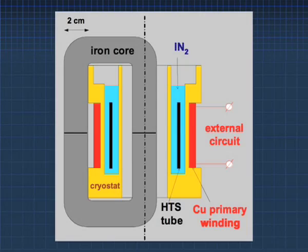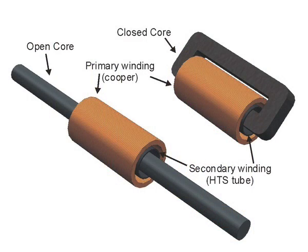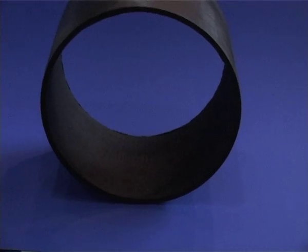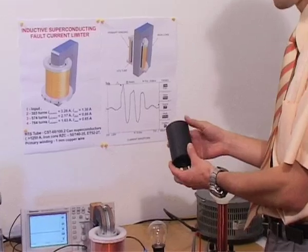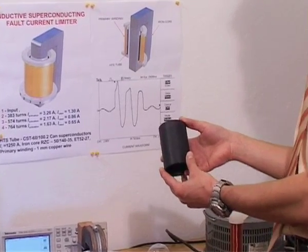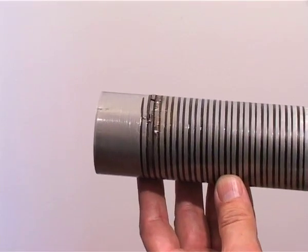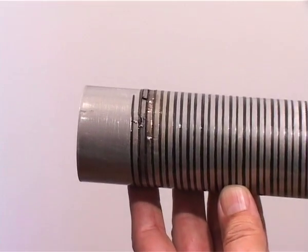The disadvantage of the inductive limiter is the large amount of iron and the very awkward nature of the cylindrical inductor. The advantage is that there are no current contacts to it, which cause losses in the resistive limiter, and also that hot spots in a cylinder are bypassed by the rest of the cylinder, whereas resistive fault current limiters are very vulnerable to hot spots.